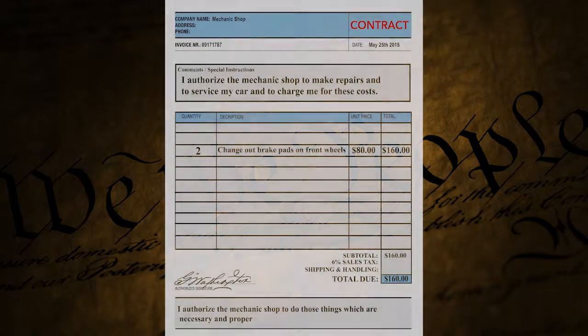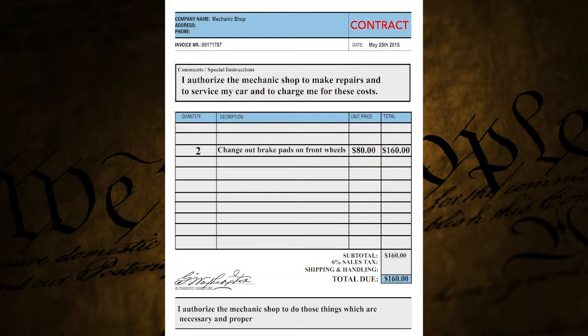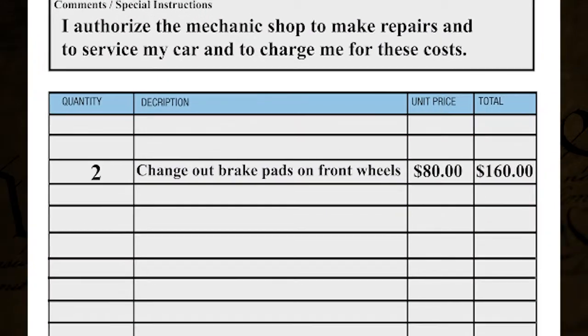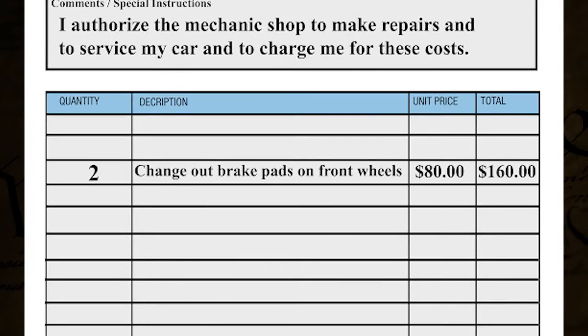Just like last time, you set up a contract. You know how important that contract is. And you say, look, none of this is funny business — I don't want you to change my car to a Ferrari. Let's look at the contract and read it together. Here's what it says: change out the brake pads on the front wheels. Simple stuff. That's what I want you to do.